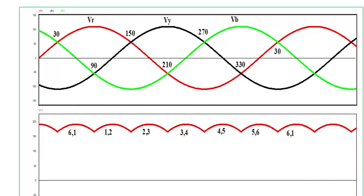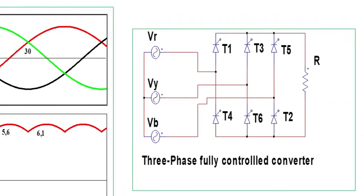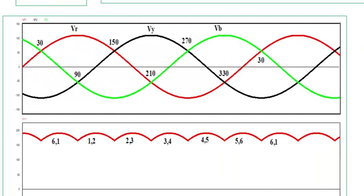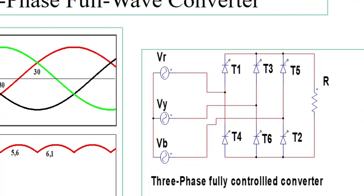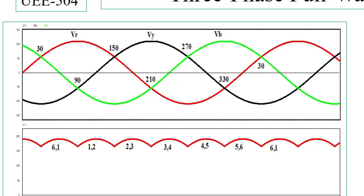From 30 to 150 degrees Vr is more than Vy and Vb, so from the top three thyristors T1 will be on. Between 30 and 90 degrees the negative maximum is Vy, so the corresponding thyristor T6 will be on. From 90 to 210 degrees Vb is negative maximum, so T2 will be on. Therefore, from 30 to 90 degrees thyristors 6 and 1 are on, and from 90 to 150 degrees thyristors 1 and 2 are on.